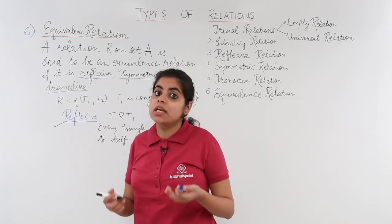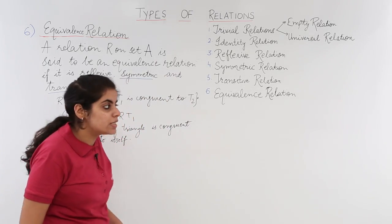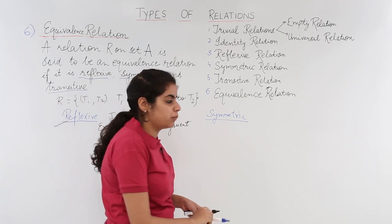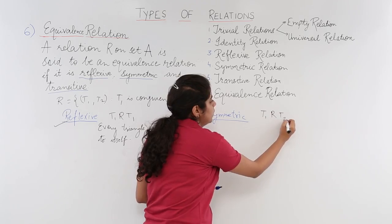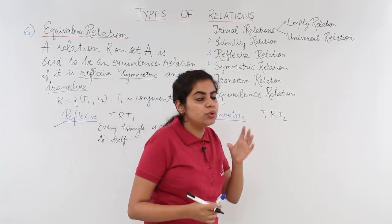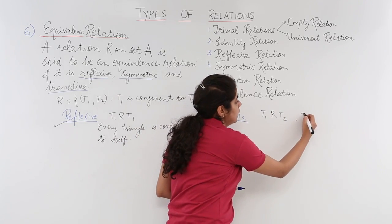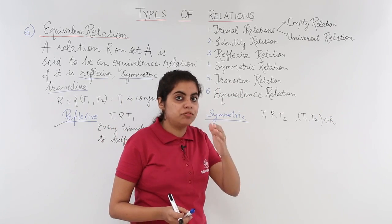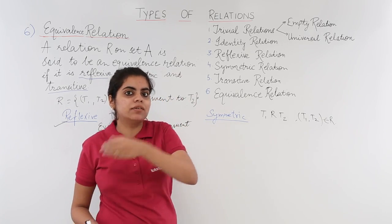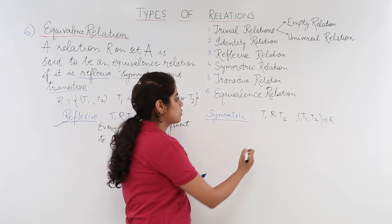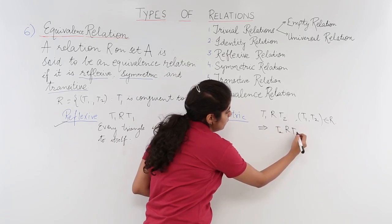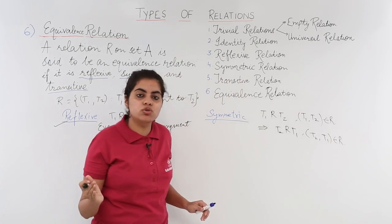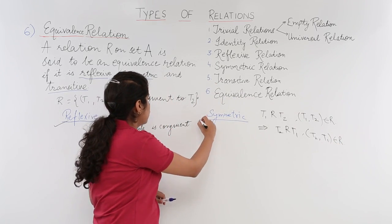Now let's check whether this congruency relation is symmetric or not. Say T1 is related to T2, meaning (T1, T2) belongs to R. If the first triangle is congruent to the second, does that also mean that the second triangle is congruent to the first? Yes. So (T1, T2) belongs to R implies (T2, T1) also belongs to R. That means yes, it is also a symmetric relation.